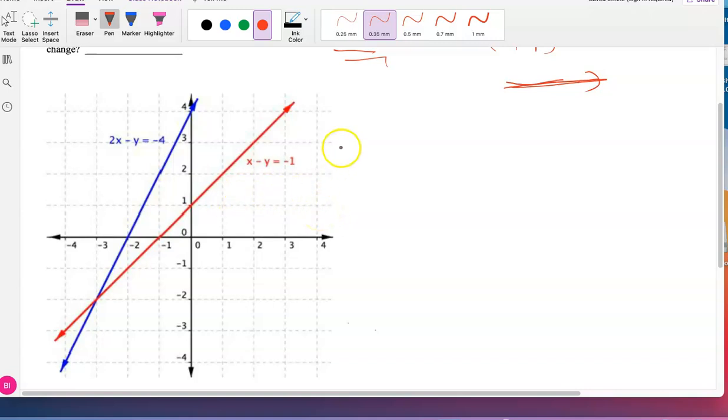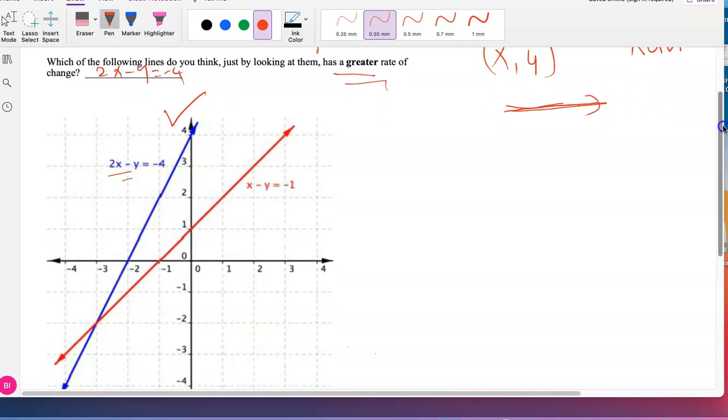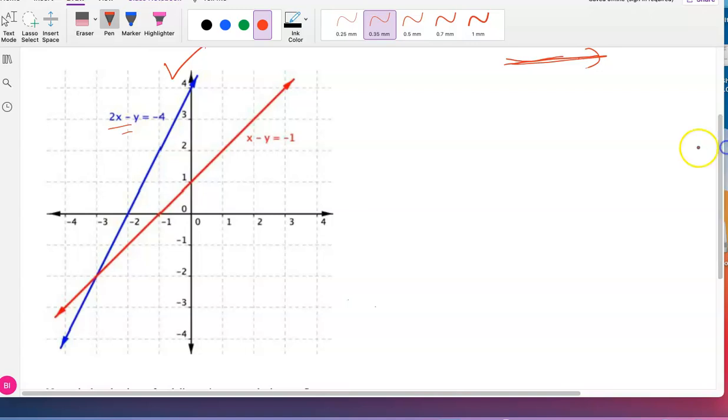Now you can conclude that the blue line, the equation 2x minus y equals negative 4, maybe this has a greater rate of change. You are seeing that it is inclined so much compared to this red line.